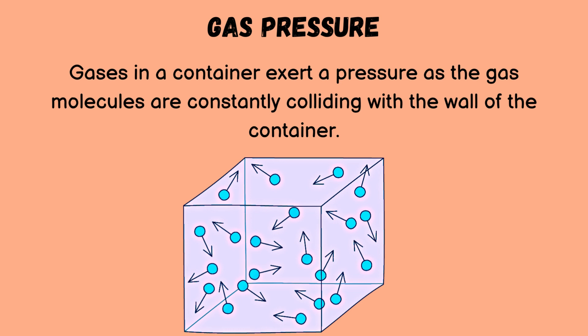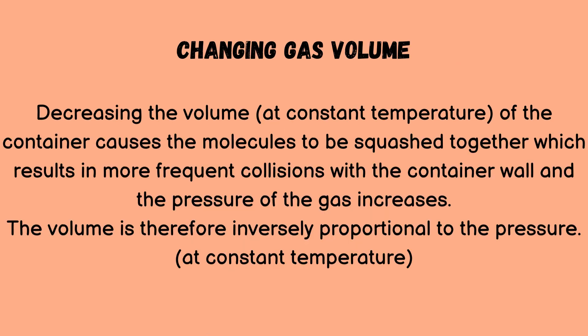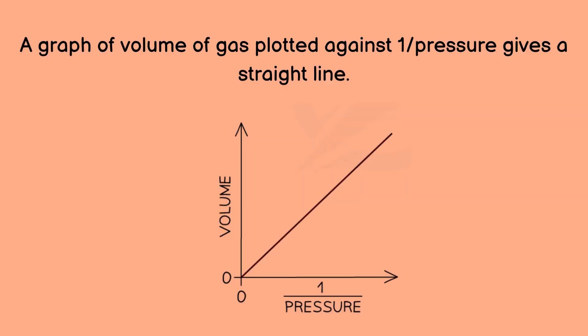Gases in a container exert a pressure as the gas molecules are constantly colliding with the wall of the container. Decreasing the volume at constant temperature causes the molecules to be squashed together, which results in more frequent collisions with the container wall, and the pressure of the gas increases. The volume is therefore inversely proportional to the pressure at constant temperature. A graph of volume of gas plotted against 1/P gives a straight line.